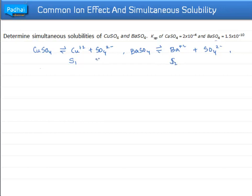Now, the solubility of SO4²⁻ would be S1 plus S2 in both cases because we will also count the solubility of SO4²⁻ for BaSO4.